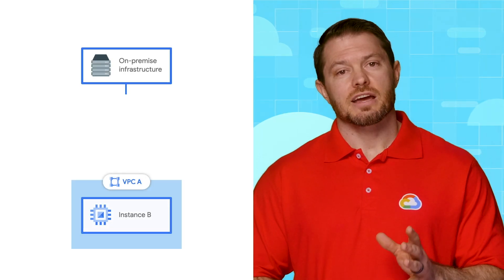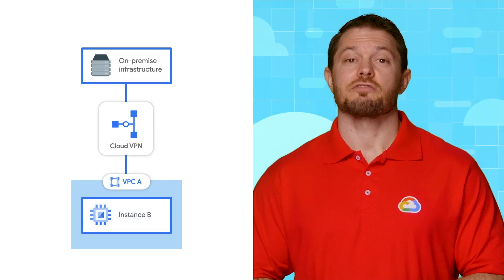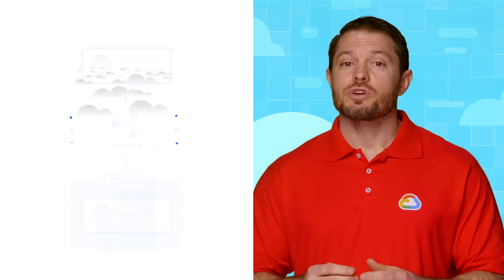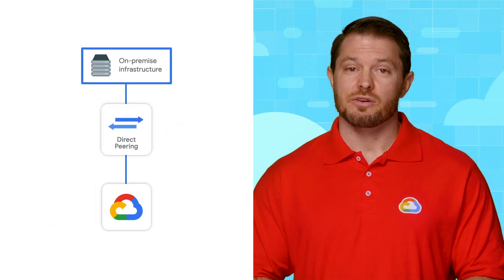There are three ways that you can do this. First, you can connect over the public internet using Cloud VPN. Second, you can connect over a private, SLA-backed, dedicated, high-speed connection using Cloud Interconnect. Or third, you can establish a direct peering connection with Google's Edge network. Typically, you would set up Cloud VPNs for testing and development or temporary connections, and establish interconnects for production environments or to support the widespread migration of your applications to Google Cloud.